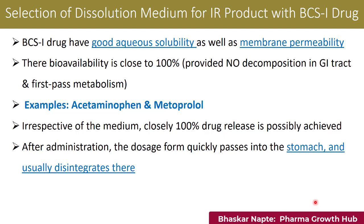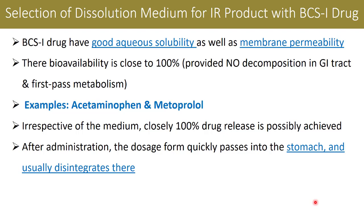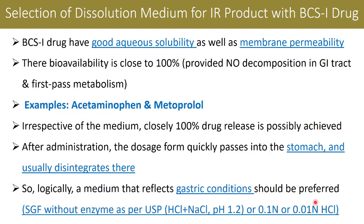After administration, the dosage form quickly passes into the stomach and usually disintegrates there. So logically, a medium that reflects gastric conditions should be the preferred dissolution medium. Gastric conditions are represented by the simulated gastric fluid as per USP, which consists of hydrochloric acid and sodium chloride at a pH of 1.2. The SGF without enzyme as per USP can be the preferred dissolution medium, or simple media like 0.1N HCl or 0.01N HCl can also work very well.